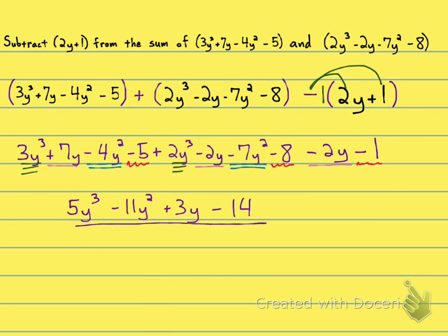And then we're done. All they want us to do is subtract a binomial from two four-term polynomials. They're not asking us to do anything else. They're not asking us to factor or anything like that.